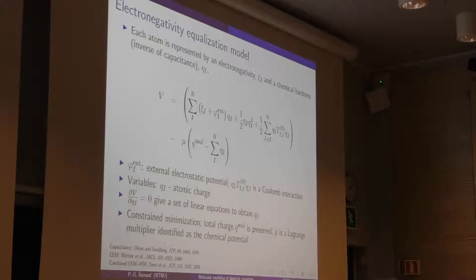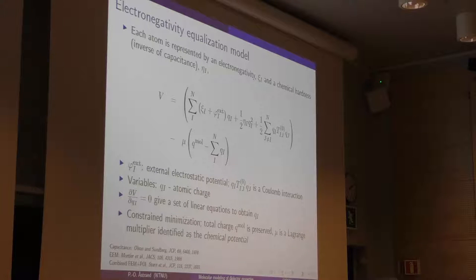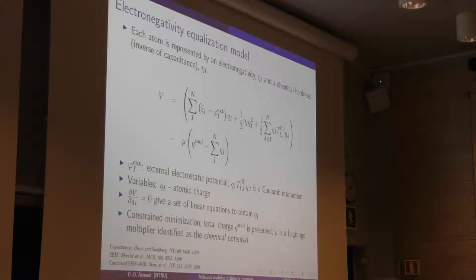There is a very similar model called electronegativity equalization. That has to do with charge transfer between particles in the system. If two atoms have different electronegativities, charge will move from one atom to the other until the electronegativity is the same everywhere. The interpretation of electronegativity is that it's the chemical potential for electrons. In these models, we have an electronegativity, an applied potential, charges, what's called chemical hardness or atomic capacitance (the work for a particle to be charged), Coulomb's law, and a constraint that charge is conserved.